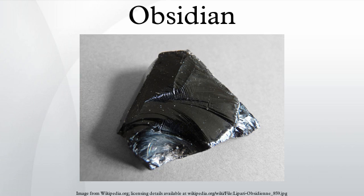Pure obsidian is usually dark in appearance, though the color varies depending on the presence of impurities. Iron and magnesium typically give obsidian a dark brown to black color. Very few samples are nearly colorless. In some stones, the inclusion of small, white, radially clustered crystals of cristobalite in the black glass produce a blotchy or snowflake pattern. It may contain patterns of gas bubbles remaining from the lava flow, aligned along layers created as the molten rock was flowing before being cooled. These bubbles can produce interesting effects such as a golden sheen. An iridescent, rainbow-like sheen is caused by inclusions of magnetite nanoparticles.